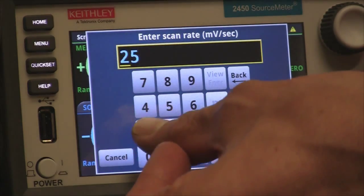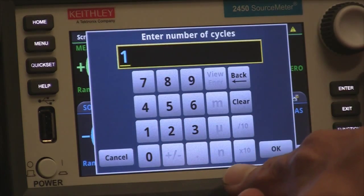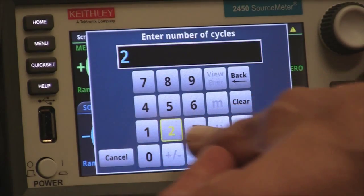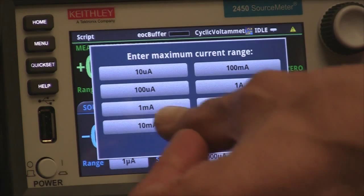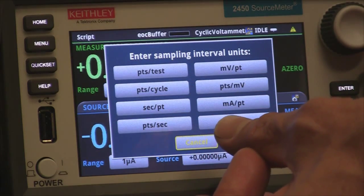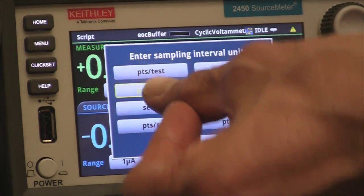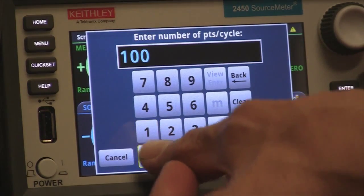For the scan rate we're going to select 100 millivolts per second. The number of cycles we're going to select 2. For the maximum current range we're going to select a milliamp based on the chemistry. The sampling interval units we're going to select the number of points per cycle and I'm going to select 1,000 points per cycle.